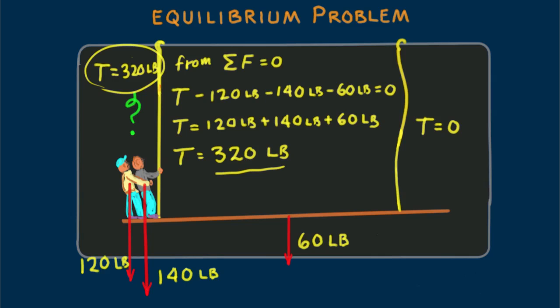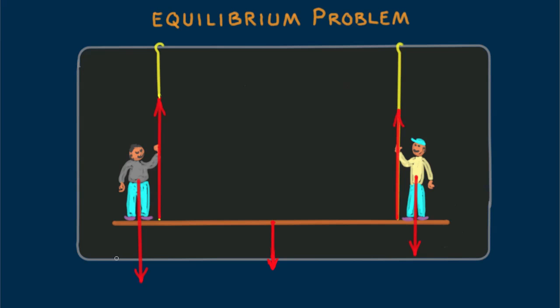Let's consider another example. Again, we show the magnitudes of the force vectors involved: 140 pounds for Burl, 60 pounds for the scaffold, and 120 pounds for my weight. Let's assume we know that the tension in Burl's rope is 170 pounds. Can you see how to find the tension in my rope, the right hand rope?